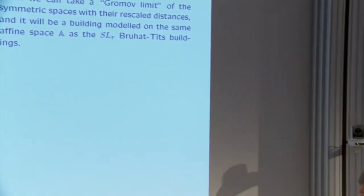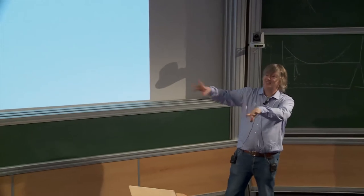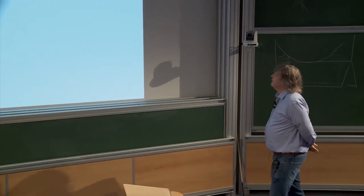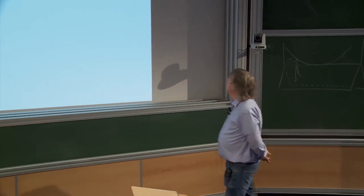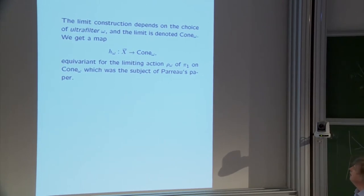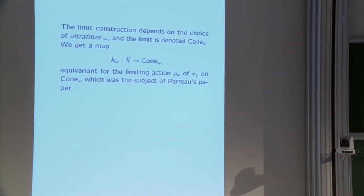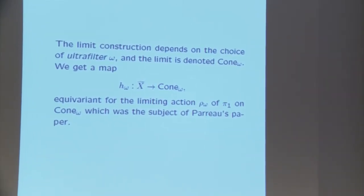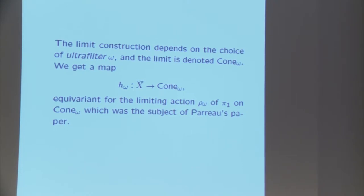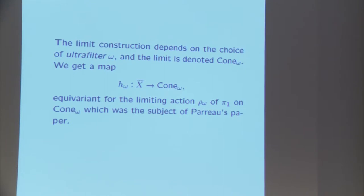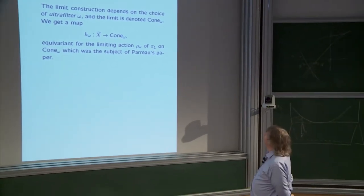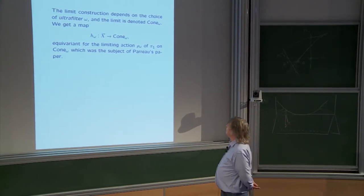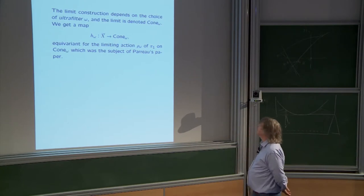Unfortunately it doesn't seem clear how to make this precise, because we can't really define a field of functions. For example, sin(x) should have exponential growth rate zero, but 1/cos(x) has lots of poles, so you can't say it has bounded growth rate. Luckily, An Pao has developed exactly this type of theory based on work of Kleiner and Leeb, so we can apply their work, perhaps with slight modifications.